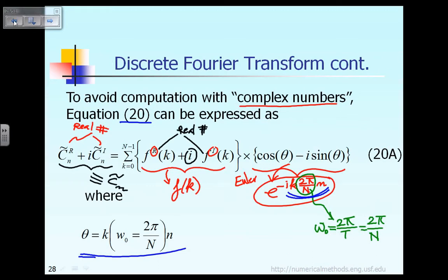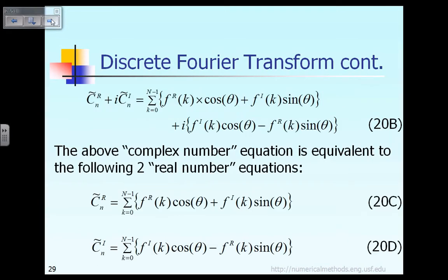On the right-hand side of equation 20a, you multiply f real with the cosine term, then multiply f real with minus i times the psi term, then multiply i times f imaginary with the cosine term, and multiply i times f imaginary with the second term. So you get four terms when you expand it. After expanding, you get four terms as shown in equation 20b — this is the first term, the second, the third, and the fourth.